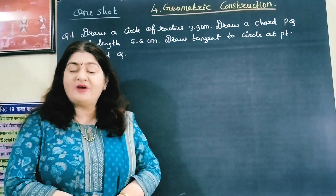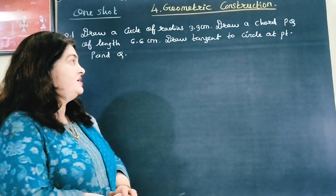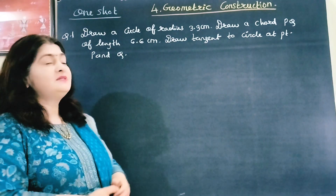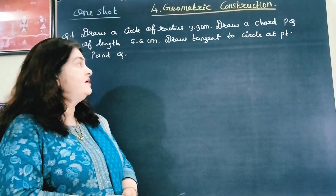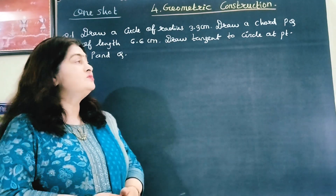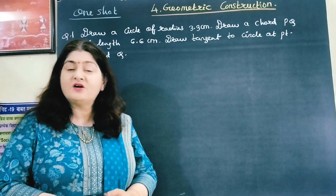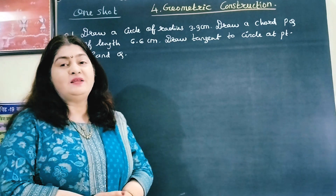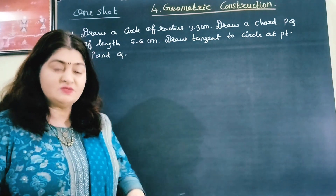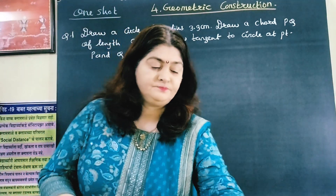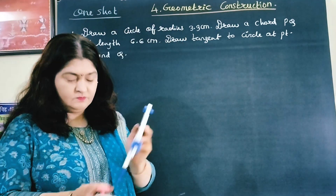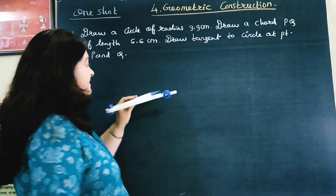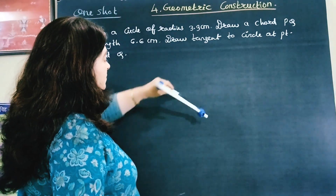In the first sum, we have to draw a circle whose radius is 3.3 cm, and the chord length given is 6.6 cm. We have to draw tangents to the circle at points P and Q. First of all, we have to draw the circle.